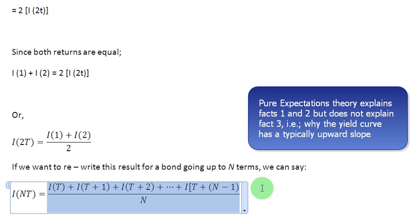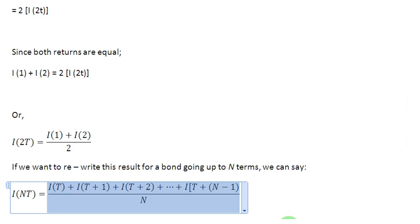Further readings will tell you that out of the three term structure facts, the pure expectations theory explains fact number 1 and fact number 2, but it does not explain fact number 3, which is that yield curves typically slope upwards. As homework, please read and find out why this is so. Thank you very much for watching.